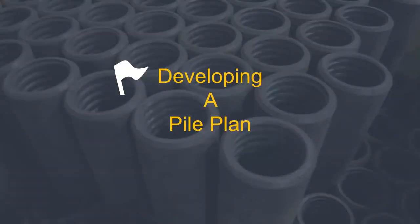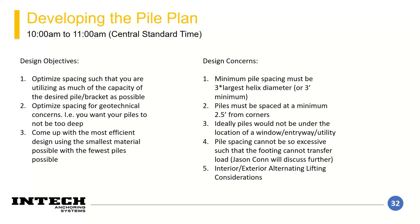Now we'll talk about developing a pile plan, because coming up with a load is only part of the story. When developing your pile plan, you have a few main objectives: first, optimize your spacing to utilize as much of the capacity of your desired pile-bracket combination as possible. Second, optimize spacing for geotechnical concerns so your piles aren't too deep — experience will play a role here since residential underpinning rarely has soil borings. Third, come up with the most efficient design using the smallest material with the fewest piles.